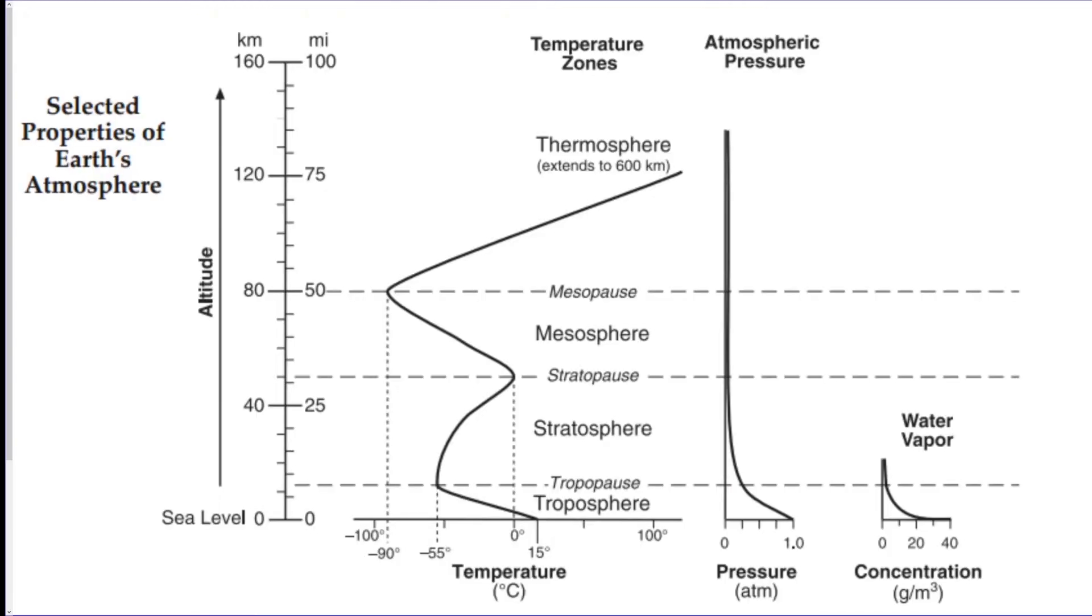So this is sort of what it looks like. I'm going to explain this little graph to you real quick. Here is our line of data right here, the black line. You could follow it all the way up through all four layers. We have the troposphere, which is layer one down here, stratosphere is layer two, mesosphere is layer three, and thermosphere is layer four. These pauses here are the boundaries between the layers. So the tropopause is when the troposphere ends and the stratosphere begins.